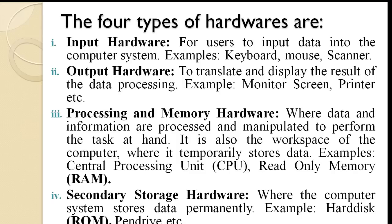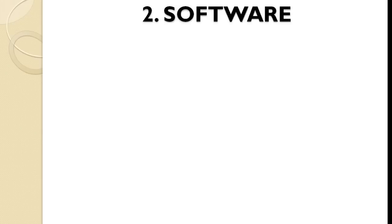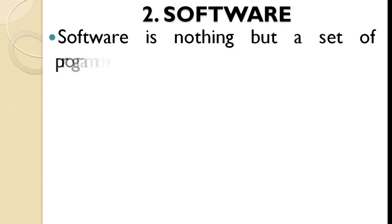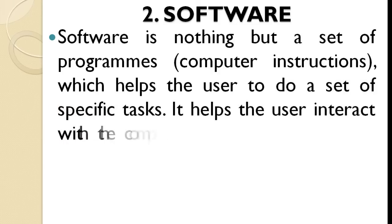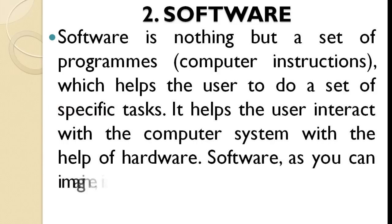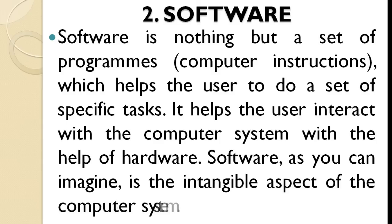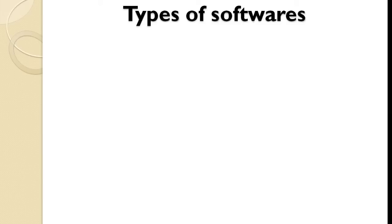With this concrete information on hardware, let us look at what softwares are. Softwares are nothing but a set of programs and computer instructions which help the user to do a set of specific tasks. It helps the user interact with the computer system with the help of hardware. Software, as you can imagine, is the intangible aspect of the computer system — it cannot be physically seen or touched. Basically, there are many types of softwares, and we will be looking at the two major types.